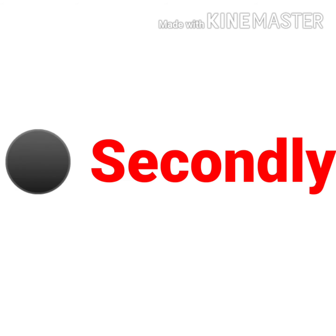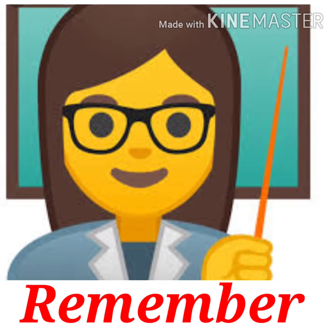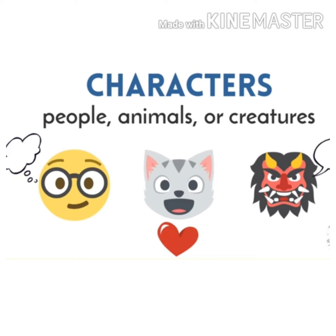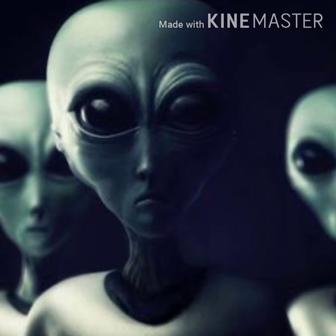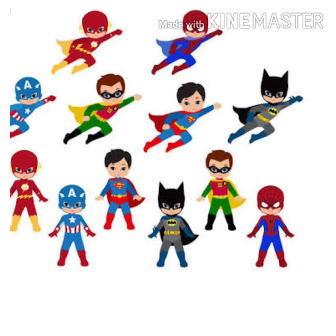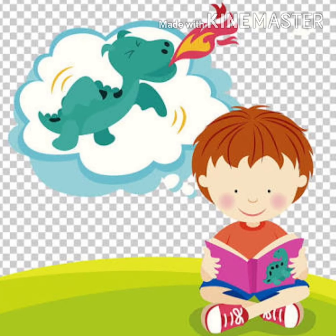The next thing to keep in mind is the characters. Remember, the characters can be people, animals, or creatures. It is not necessary that the characters must be human beings. They can be animals, talking animals, talking birds, or you can choose creatures too as your characters — like aliens, vampires, ghosts, or witches. So select an appropriate character that matches with your idea or your paragraph.